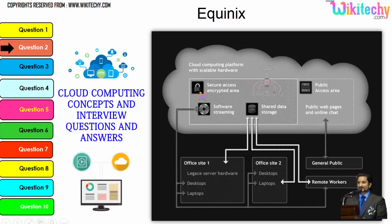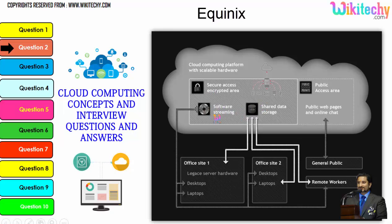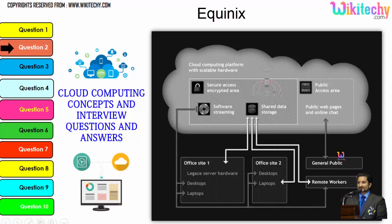Cloud computing has a public access area with public web pages for end users. There is also secure data access, shared data storage, and software streaming. Companies can use it as a private kind of setup, and the public can use it to access web pages or websites. This is how cloud computing works.